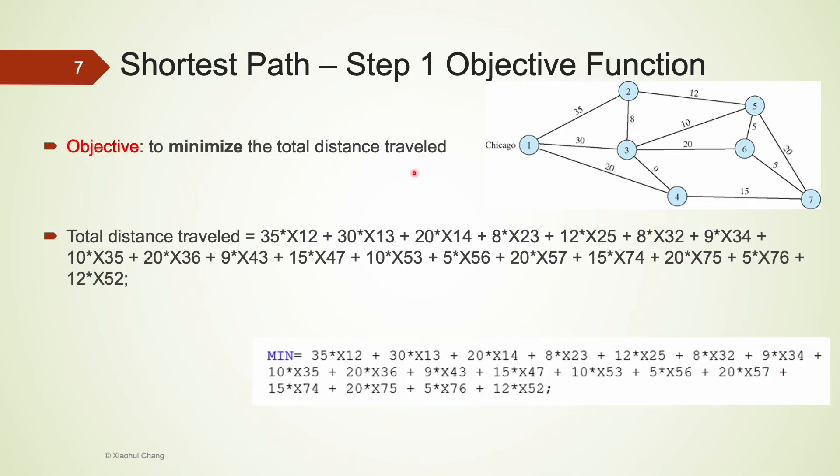The objective of this problem is to minimize the total distance traveled. We do know the distance traveled for each line segment. For example, from Chicago to 2, the distance traveled is 35 miles. If this line segment 1, 2 is included in the path, that means x1,2 is going to be 1, and the total distance traveled would increase by 35 multiplied by x1,2.